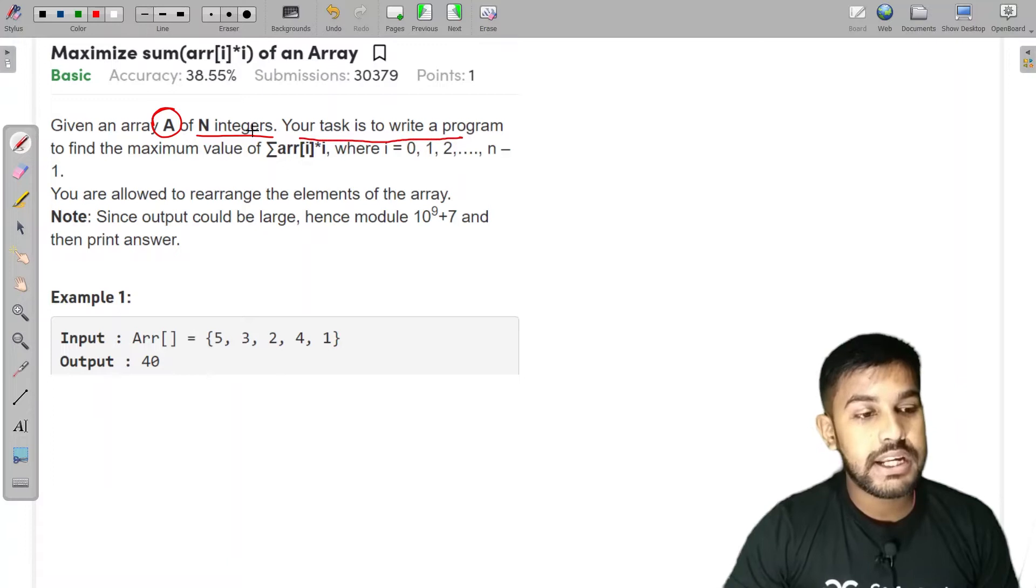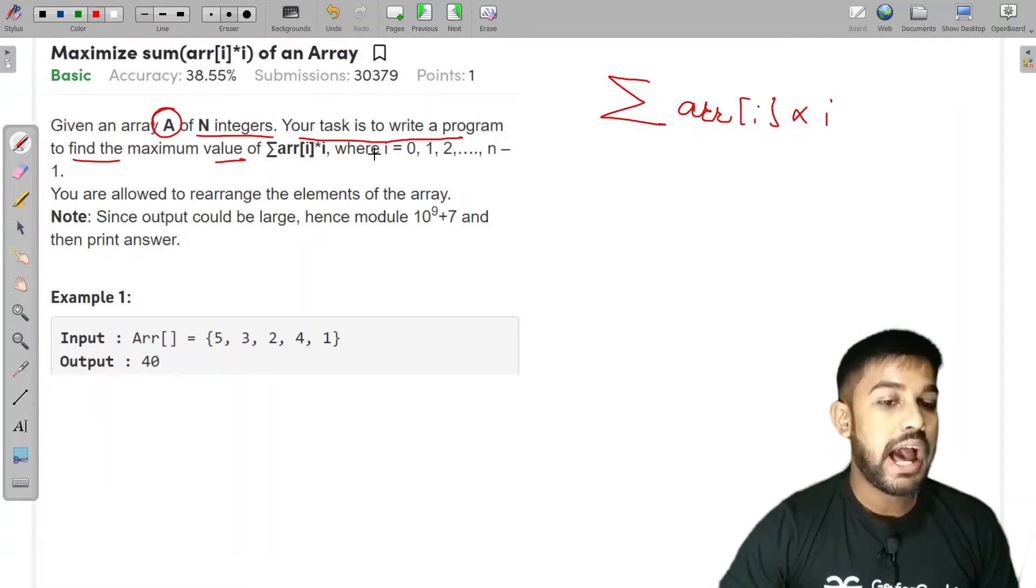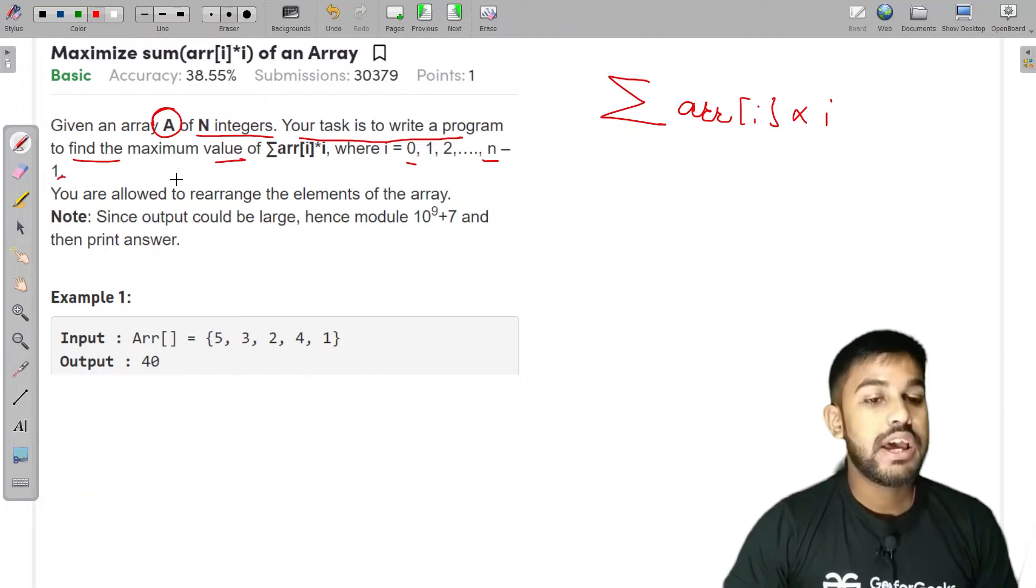So we are given an array A of N integers. Your task is to write a program to find the maximum of sum of, this is known as sum of array i into i, and i is from 0 till n minus 1. This means that i would be 0 indexed.